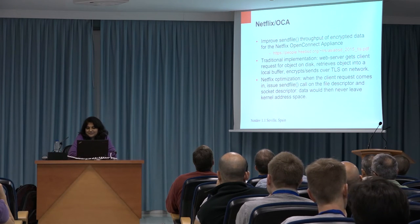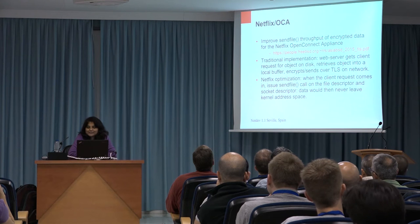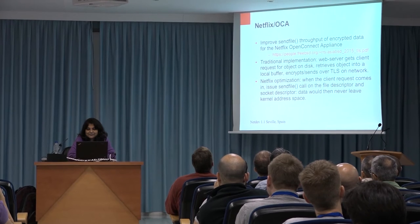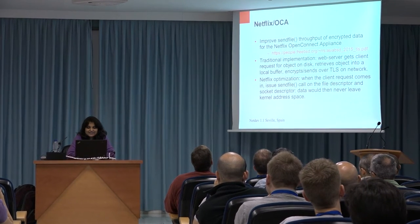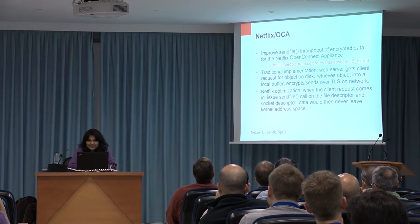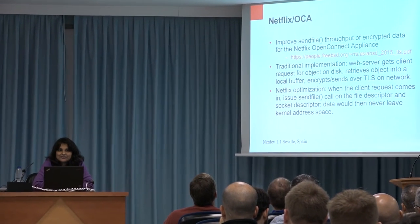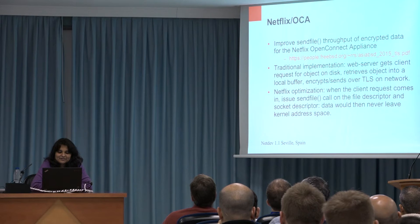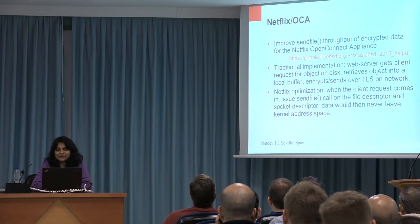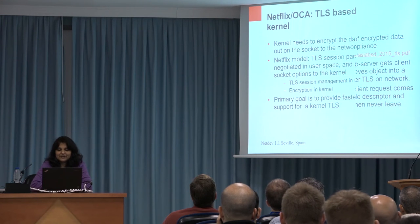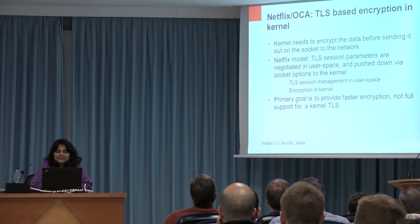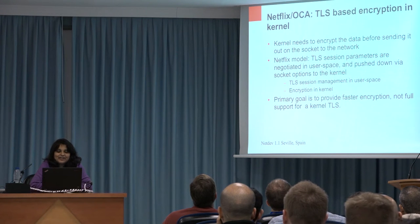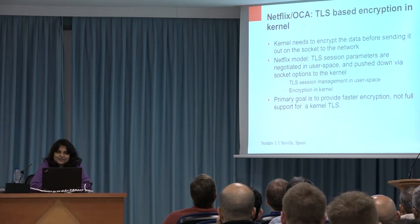The Netflix paper looks at an OpenConnect appliance. They had a web server that gets a client request for an object on disk, retrieves it into a local buffer, encrypts it, and sends it out. The obvious way is to do encryption in user space. What they were trying to do is avoid the bounce from kernel to user space by doing a sendfile on the file descriptor and sending over the socket descriptor without ever going into user space. But to do that, the kernel needs to know how to encrypt the data — and what they proposed is the split TLS model, with session management in user space and encryption in the kernel.